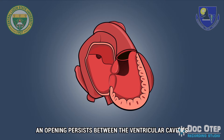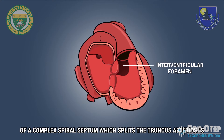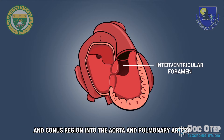An opening persists between the ventricular cavities. Closure of this ventricular foramen awaits the elaboration of a complex spiral septum which splits the truncus arteriosus and conus region into the aorta and pulmonary artery.